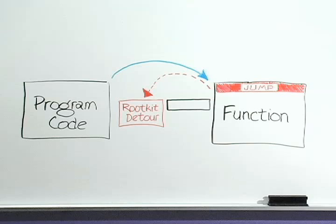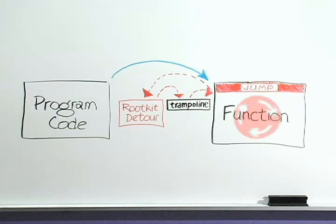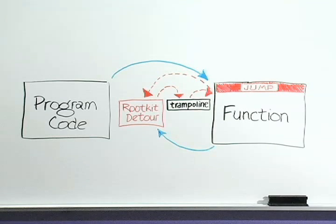The rootkit code now runs the original function. However, because part of the original code has been moved, right now the function can't function. So the rootkit calls that first bit of code, referred to as the trampoline, which allows the function to resume as it normally would after the jump point. This little swap fools the function into believing that the rootkit code is the origin of the request. So when the function is done, it returns its results to the rootkit. The rootkit code can then decide which parts of the results to pass to the real program.